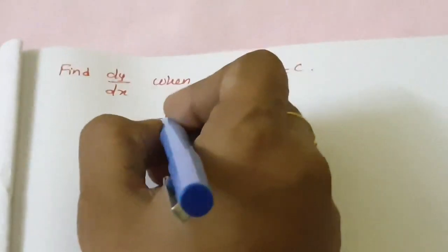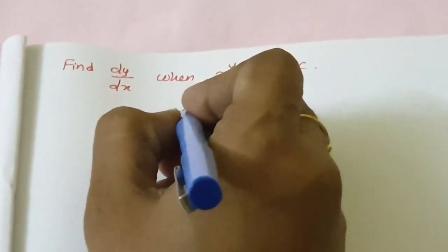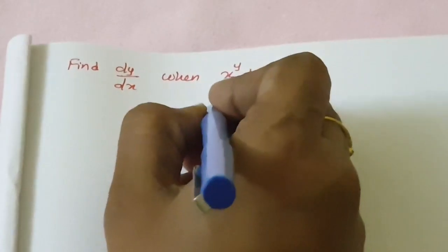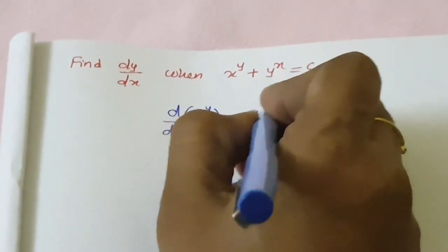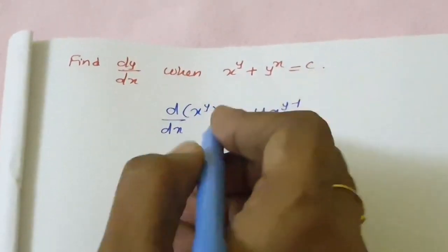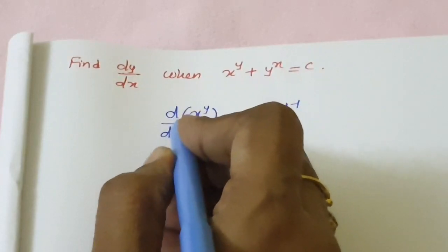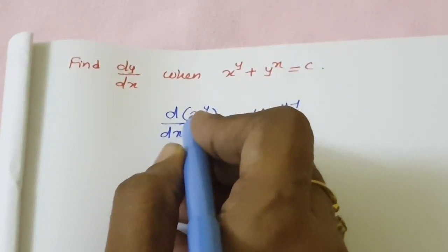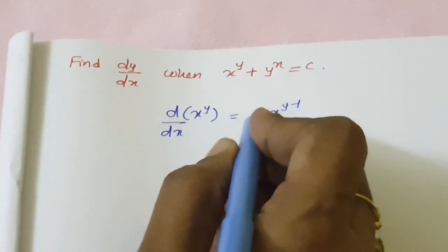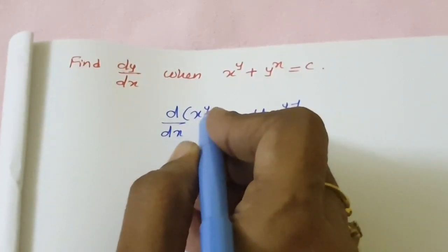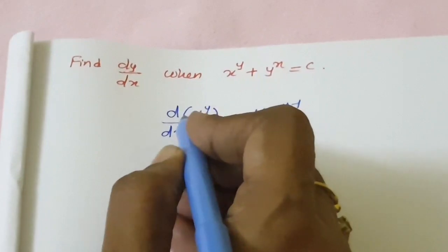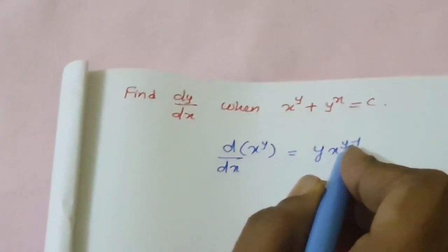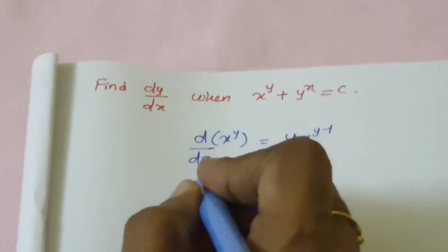We know the formula of differentiation of x power y with respect to x as y into x power y minus 1. When x occurs in the base, you differentiate the power only. So, x power y differentiated with respect to x gives y into x power y minus 1.